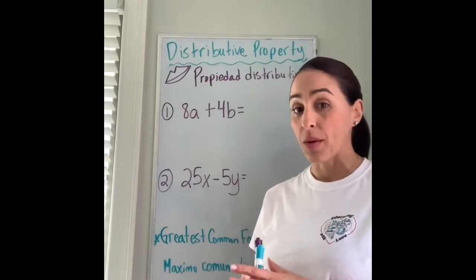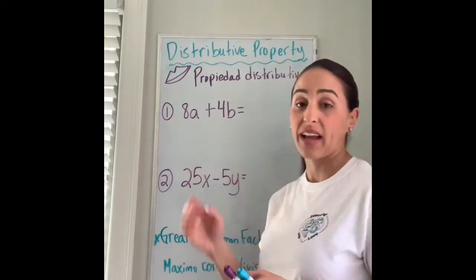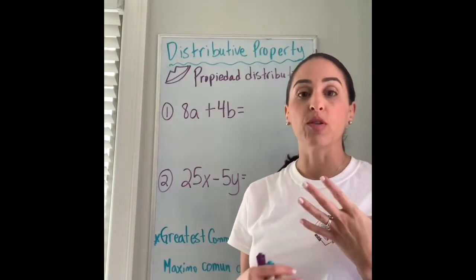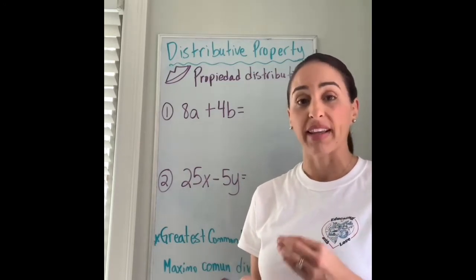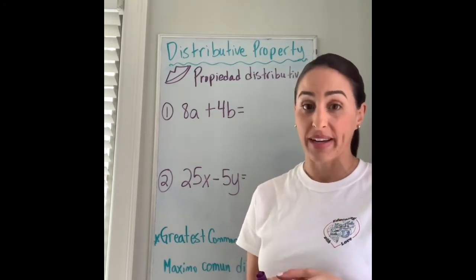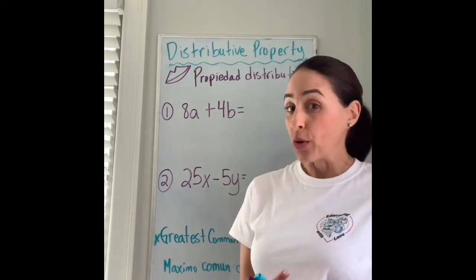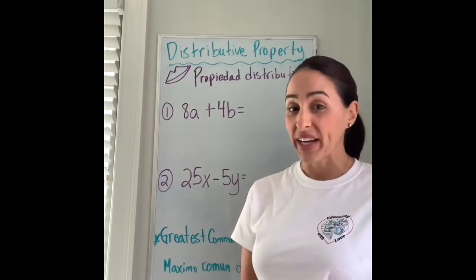We're going to think what is the greatest common factor between these two numbers, 8 and 4. That means what numbers multiply to get 8 or what numbers multiply to get 4 that they have in common, and it has to be the greatest. I know 2 goes into both of them, but it's not the greatest common factor.